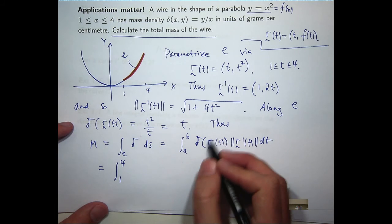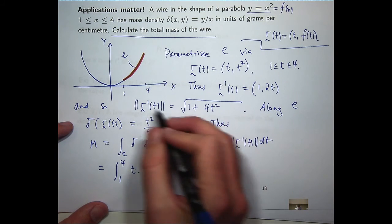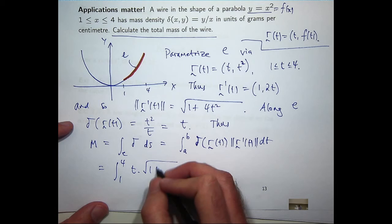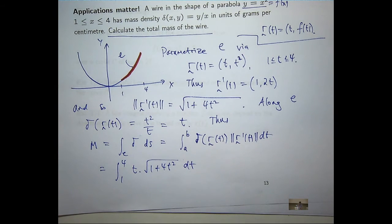The density function along the curve is going to be t. And the magnitude of the tangent vector is this square root expression. OK. So we've come down to some sort of integral that we want to evaluate.